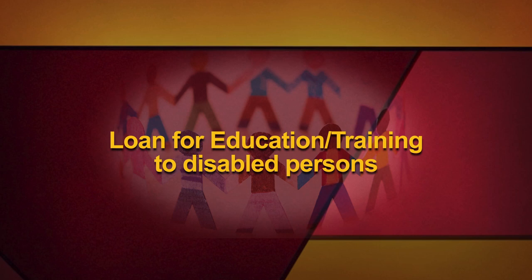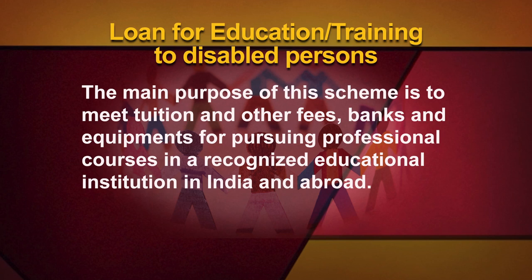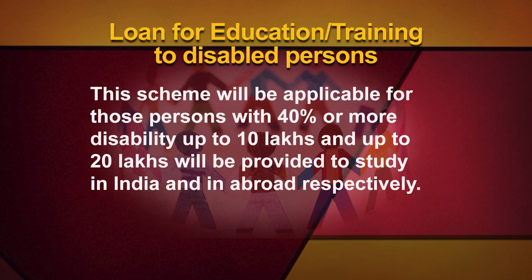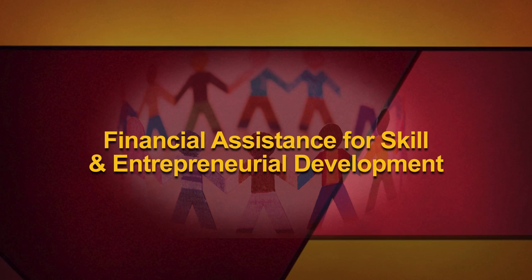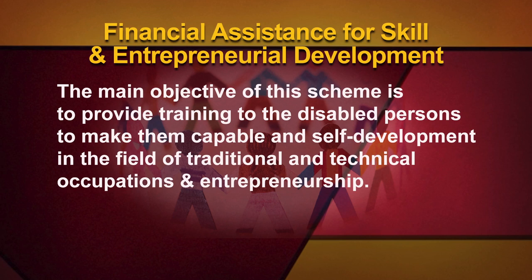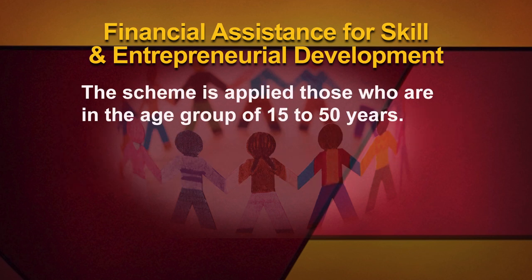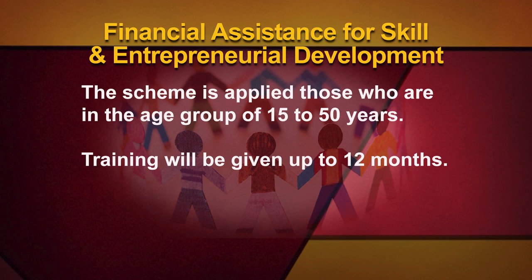Loan for education or training to disabled persons: the main purpose of the scheme is to meet tuition and other fees, books and equipment for pursuing professional courses in a recognized educational institution in India and abroad. This scheme will be applicable for those persons with 40% or more disability. Up to 10 lakhs and up to 20 lakhs will be provided to study in India and abroad respectively. Financial Assistance for Skill and Entrepreneurial Development: the main objective is to provide training to disabled persons to make them capable and support self-development in traditional, technical occupations and entrepreneurship. The scheme is applied to those in the age group of 15 to 50 years. Training will be given up to 12 months, and during training, rupees 2000 per month stipend will be provided.